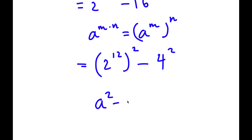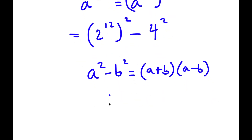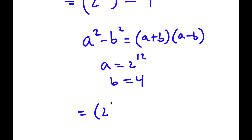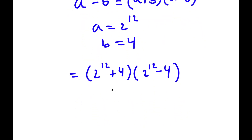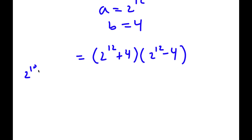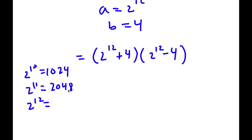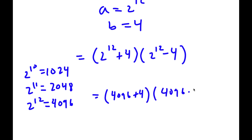Now, if I have something in the form a squared minus b squared, this is equal to a plus b times a minus b. In this case, a is 2 to the power of 12 and b is 4. So I have 2 to the power of 12 plus 4, times 2 to the power of 12 minus 4. Now, 2 to the power of 10 is 1,024; 2 to the power of 11 is 2,048; and 2 to the power of 12 is 4,096. So now I have 4,096 plus 4 times 4,096 minus 4.